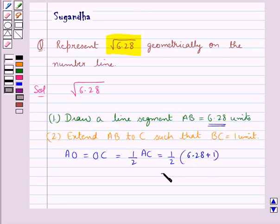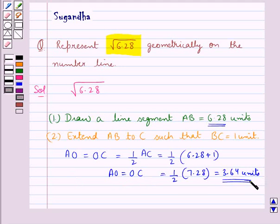So this is equal to half of 7.28 equal to 3.64 units. So we have AO equal to OC is equal to 3.64 units.